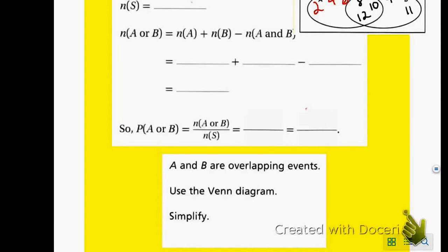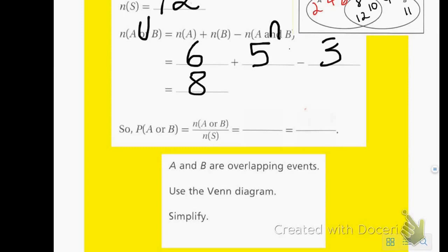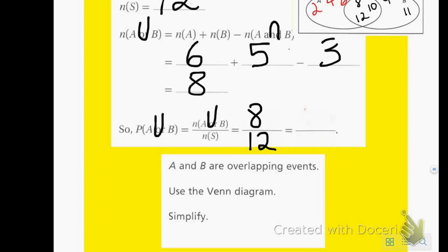To find the probability of A or B, I find the number in the sample space, which is 12. The number in A was 6, the number in circle B was 5, and the number in both sets — the intersection — was 3. So 6 plus 5 is 11, minus 3 is 8. The probability of A union B is 8 over 12, which reduces by a factor of 4 to give us 2 over 3.